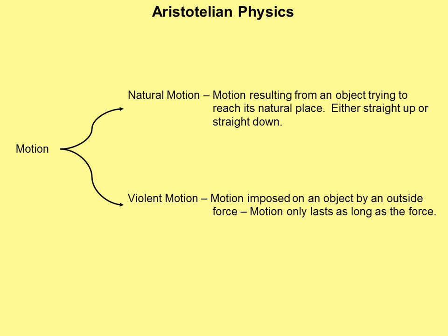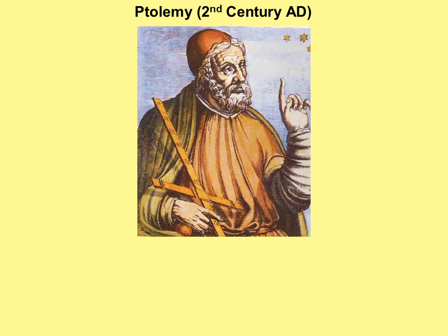This had some consequences to the ancient Greek mind, including how they viewed our solar system. The Earth, created by the gods, must be in its natural place. If it's in its natural place, the only way for the Earth to move would be to impose violent motion upon the Earth. A force big enough to move the Earth is unthinkable. Therefore, the Earth doesn't move. We have what is known as the Ptolemaic, or geocentric, solar system.